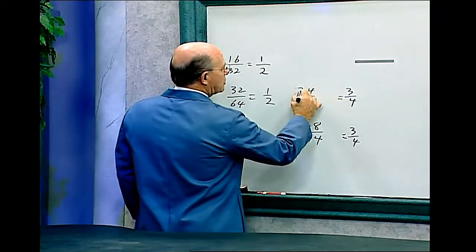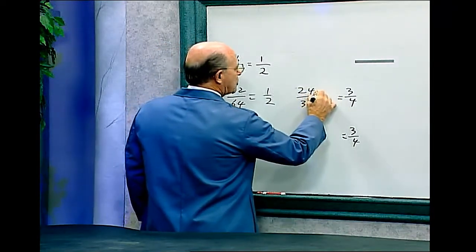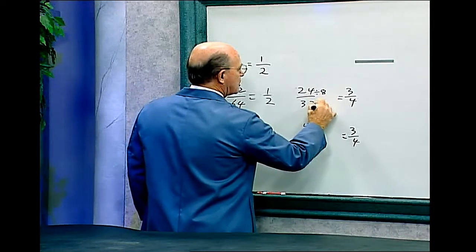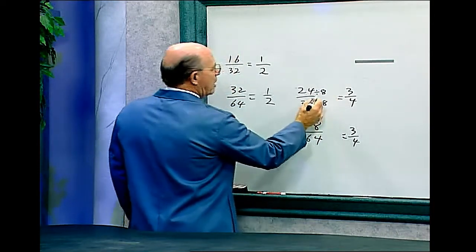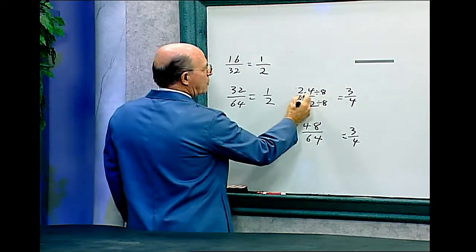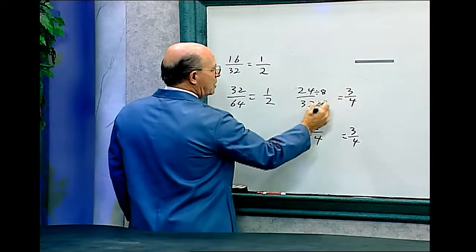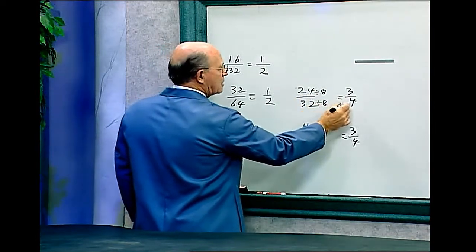Three goes into twenty-four eight times. So divide this by eight. Divide this by eight. Twenty-four divided by eight is three, and thirty-two divided by eight is four.